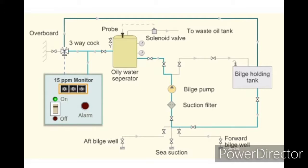The separated oil collects at the top of the oily water separator. A probe senses the increase in oil and opens a solenoid valve. The separated oil flows to the waste oil tank. Before starting, check the proper functioning of the 15 ppm monitor alarm, three-way cock, and the oil solenoid valve.